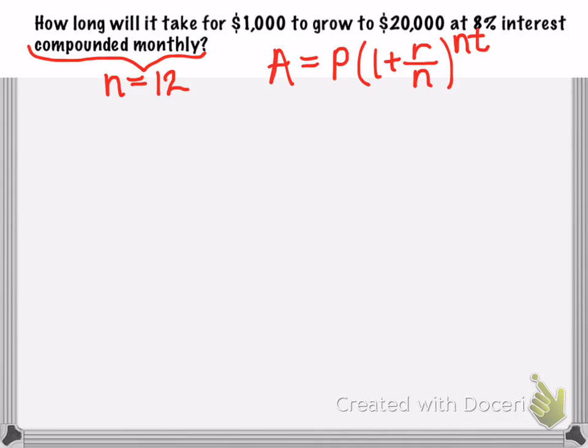So we'll start with P. Our principle is how much money we're starting with, the initial amount, and we see right here that our initial amount is $1,000. So that means that our P is 1,000.